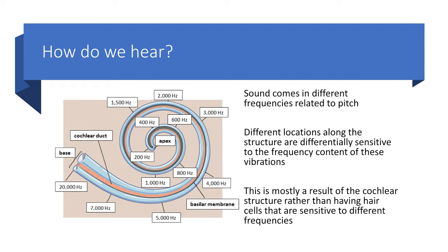We call this structured arrangement of hair cells the tonotopic map. Research has shown that the spiral or snail shape of the cochlea leads to increased sensitivity to low-frequency sounds, and that high-frequency sounds are detected at the base of the membrane while low-frequency sounds are detected primarily at the apex. This means we're more likely to lose the ability to hear high-pitched noises first, because low-pitched frequencies propagate throughout the entire cochlea while higher-pitched frequencies have difficulty reaching the apex, resulting in more accumulated damage near the base.